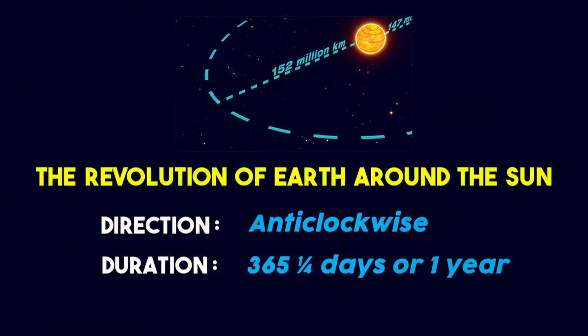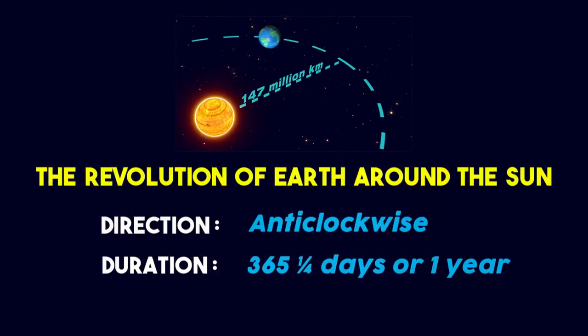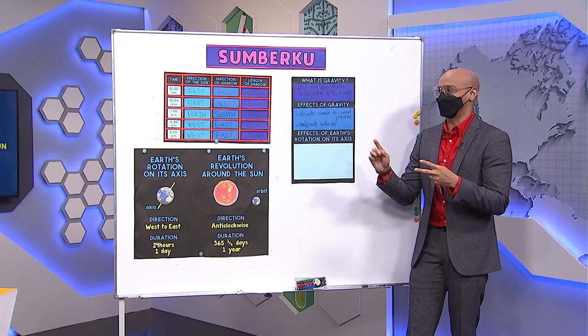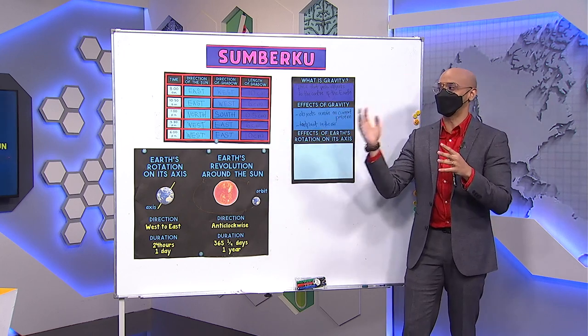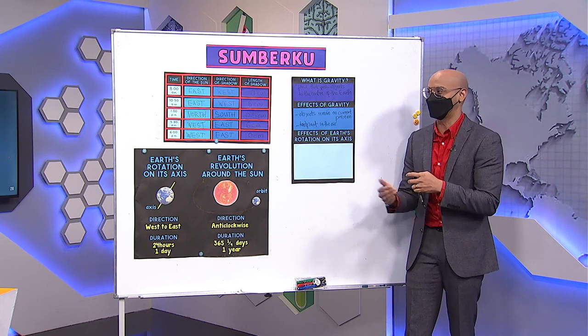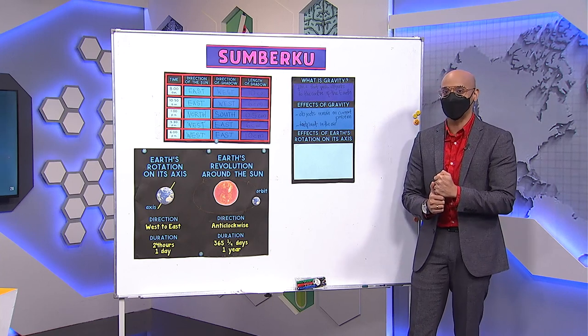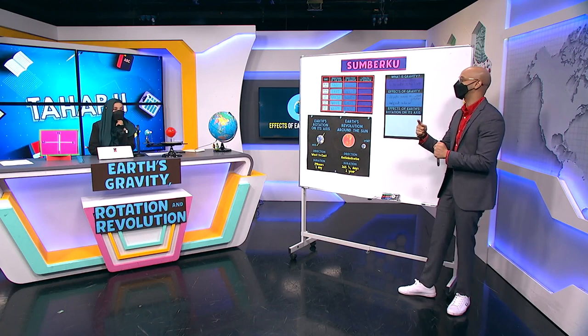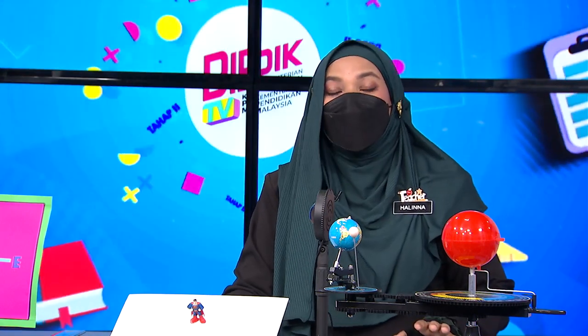Now the effects of Earth's rotation on its axis — there are three. Number one, the occurrence of day and night. Number two, the sun seems to rise from the east and set in the west. Number three, the direction of the shadow is opposite to the direction of the sun, and the length of the shadow decreases then increases from morning till evening. Absolutely right!